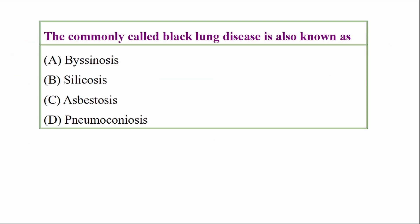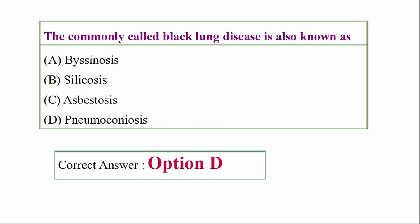The commonly called black lung disease is also known as — options: Bicinosis, Silicosis, Asbestosis, Pneumoconiosis. Answer option D: pneumoconiosis. The commonly called black lung disease is also known as pneumoconiosis.